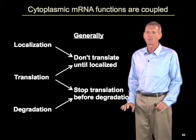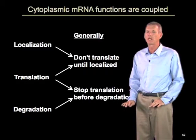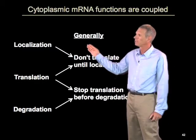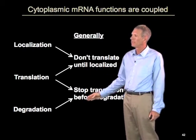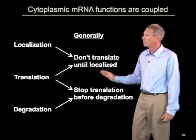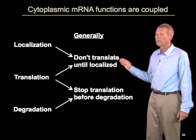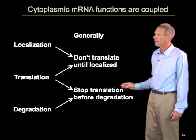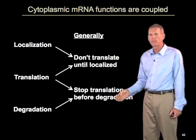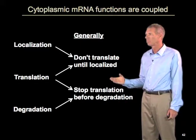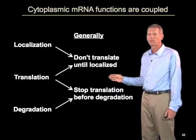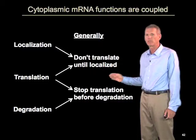So, to step back so far, what I've told you about really are three key areas of cytoplasmic mRNA function: localization of the mRNA, translation, and degradation. These three processes are coupled with the general rules that you don't translate until you're localized, and you stop translation before you degrade. They may be coupled even more mechanistically because a similar group of proteins involved in translation repression and decapping is involved in coupling these processes of translation and degradation.